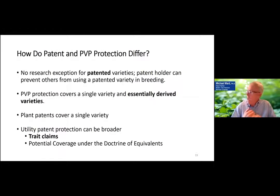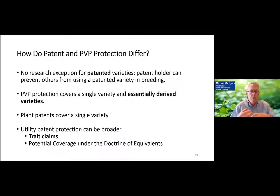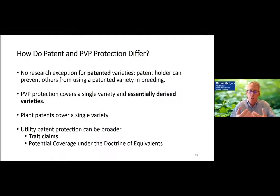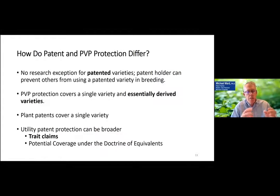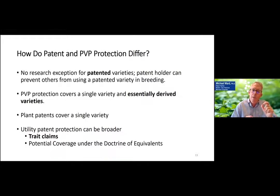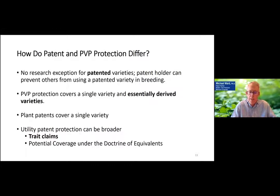How do patent and PVP protection differ? There's no research exemption for patent varieties. In contrast, when you have PVP protection, there is a research exemption — a third party can use PVP-protected material in breeding. That's not so for patented varieties. So if there's a patent on orange trees, no one can use those in breeding. PVP protection also covers a single variety and essentially derived varieties. Plant patents cover just a single variety, while utility patent protection can be considerably broader, including trait claims and potential coverage under the doctrine of equivalence.